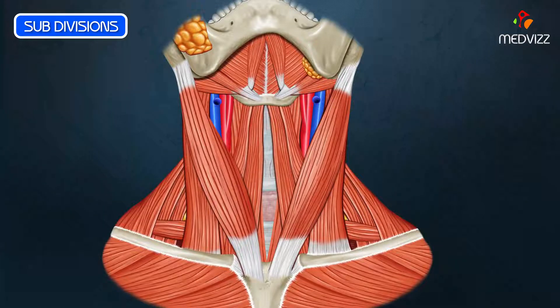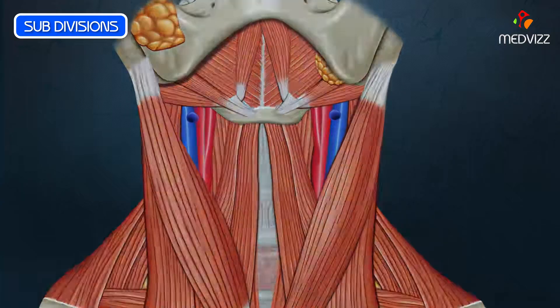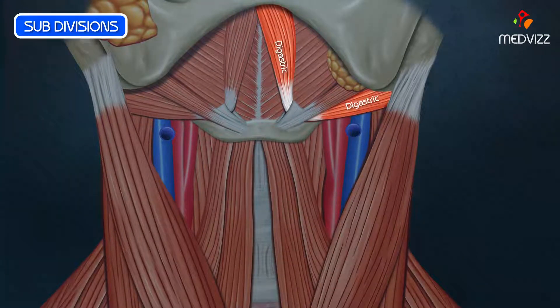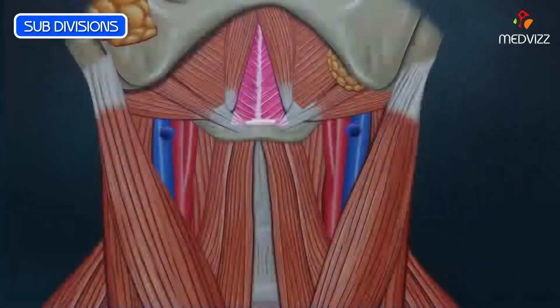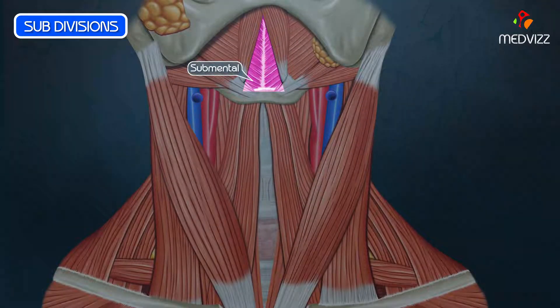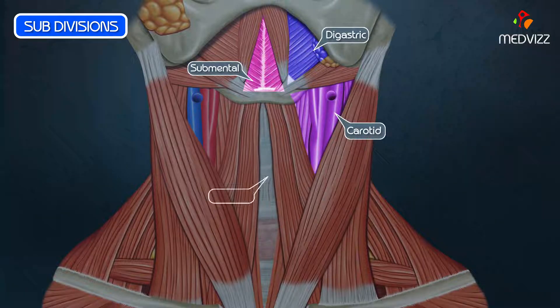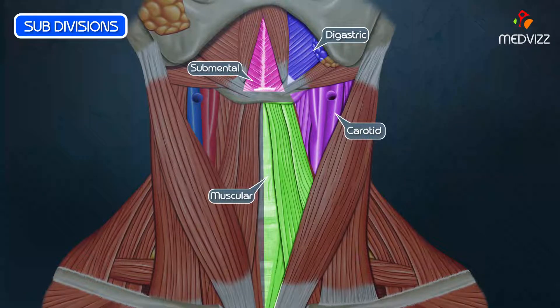This anterior triangle is further subdivided by the digastric muscle and the superior belly of the omohyoid into four triangles: the submental, digastric, carotid, and muscular triangles, which are all embedded within the anterior triangle of the neck.